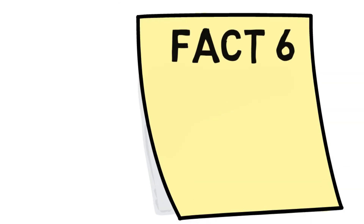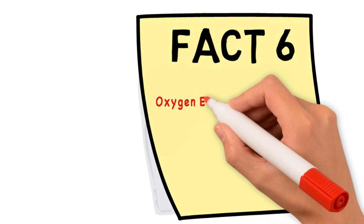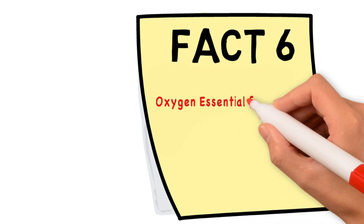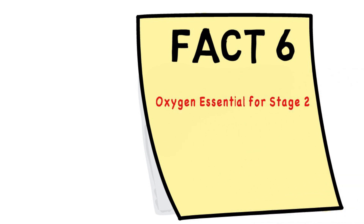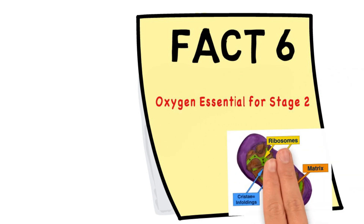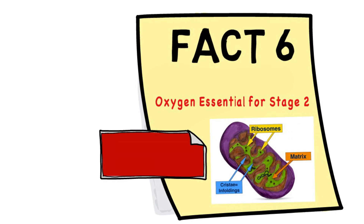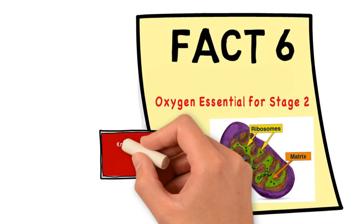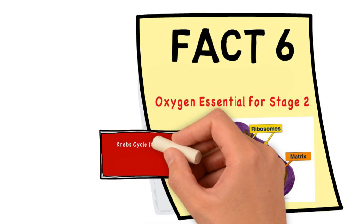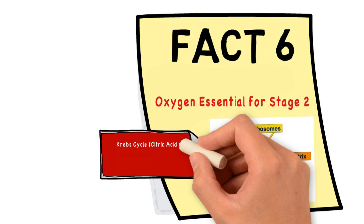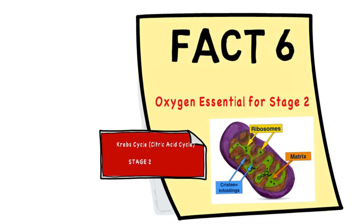Fact six: stage two can only occur if oxygen is present. It takes place in the mitochondria of the cells, and Krebs cycle is this series of reactions in stage two — it's sometimes called the citric acid cycle.